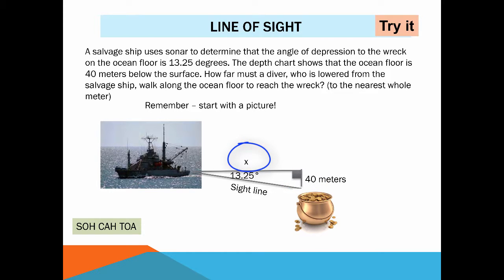So I think aha the tangent is equal to the opposite side over the adjacent side so the tangent of 13.25 must equal 40 over X. Now I have an equation that I can solve.